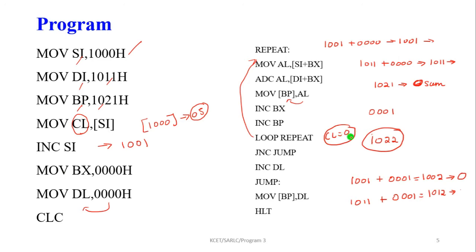Once the CL value becomes zero, we check the carry flag. If the carry flag value is 1, the DL value is incremented. Otherwise, the DL value (which is 00) is moved into the base pointer register's memory location. If the carry was 1, the incremented DL value is moved into the base pointer memory location. This is the complete program for multi-byte addition.